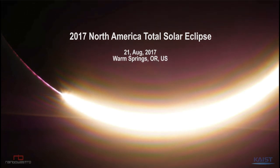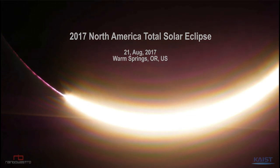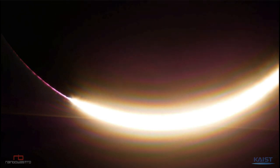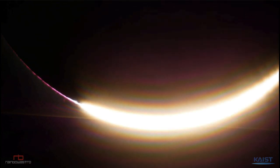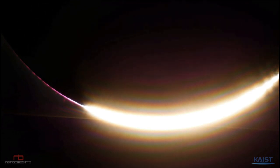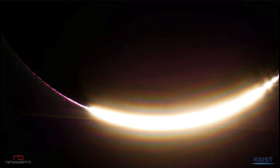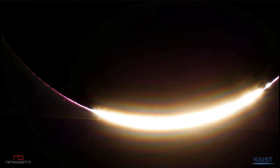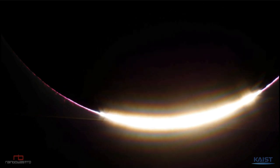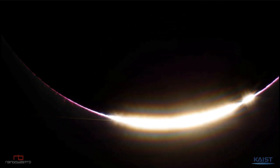The first thing you'll see is the introduction screen noting what the eclipse was and where it was taken — in Worms Spring, Oregon. As we watch, we're going to see the very beginning of the eclipse here as the moon is just covering that last little portion of the sun.